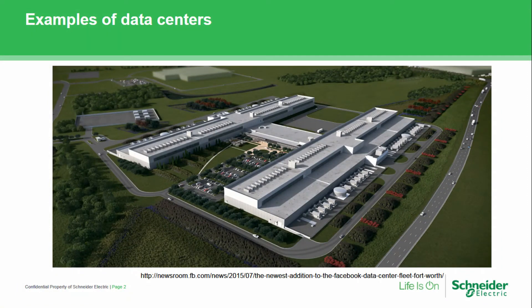If people have a question on what a data center is, we should really go through inside and out what a data center looks like. What we have here is a rather large data center campus — this happens to be a Facebook data center, publicly available on their website. The first thing you notice is that it's a sprawling campus, a big facility. These are what's known as internet giant or hyperscale data centers, like those operated by Google, Apple, and Amazon. They could be a million square feet or more — that's 20-plus regulation-size soccer fields.